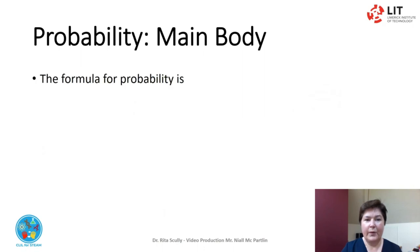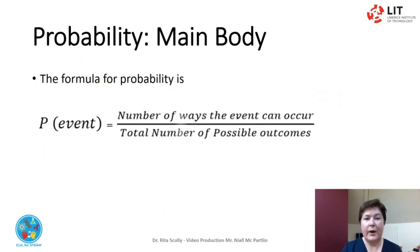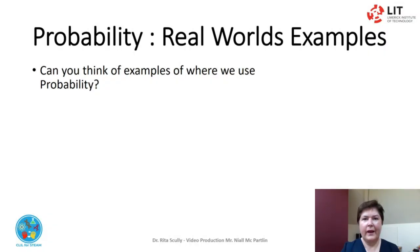The formula for probability is: the event is equal to the number of ways an event can occur over the number of possible outcomes. Can you think of examples where we use probability?